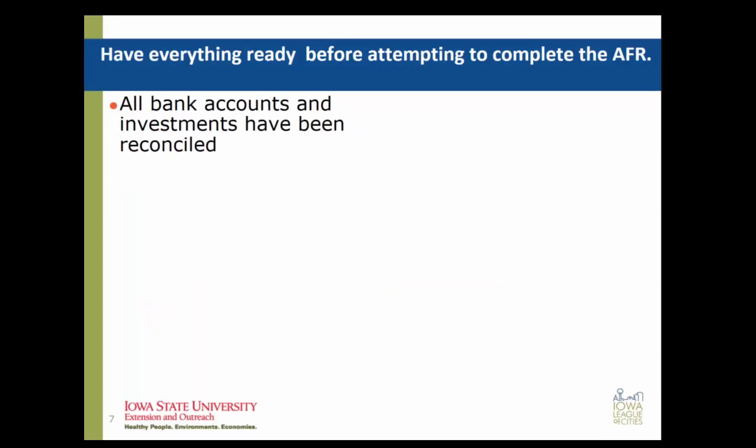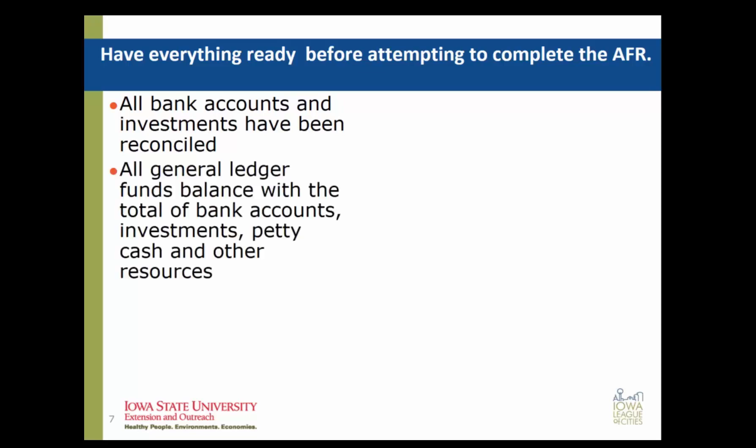There are a few things you need to have ready before you start to complete your Annual Financial Report. First, you need records from all of your bank accounts and investments, and they need to have been reconciled. You will also need your general ledger fund balance with the total of bank accounts, investments, petty cash, and other resources — complete with reconciliations for each month. You will need to have identified all intergovernmental payments, which may be money received from another city for use of your library, or funds paid to another entity through a 28E agreement for police or fire protection.